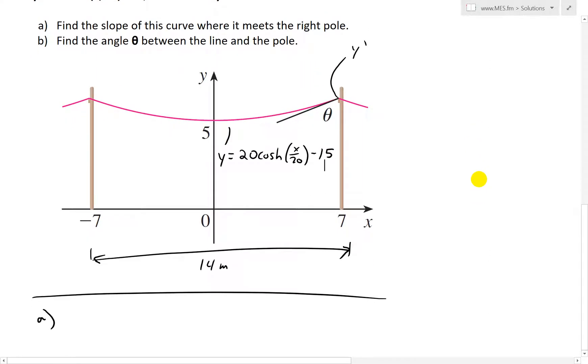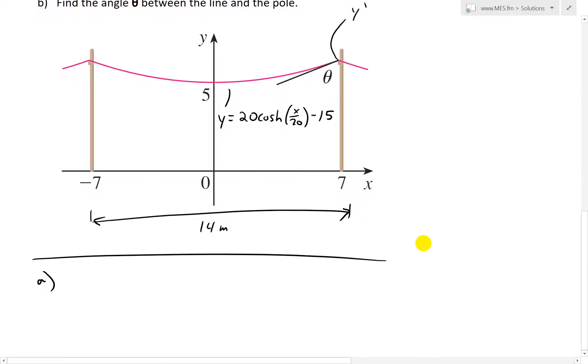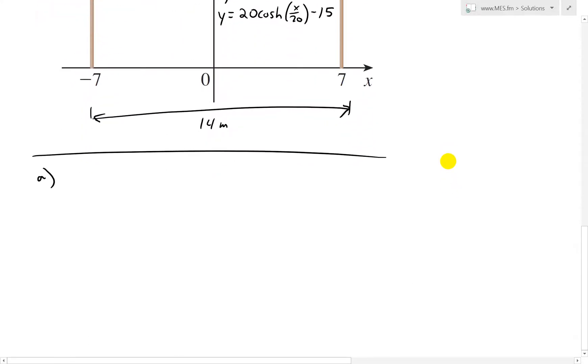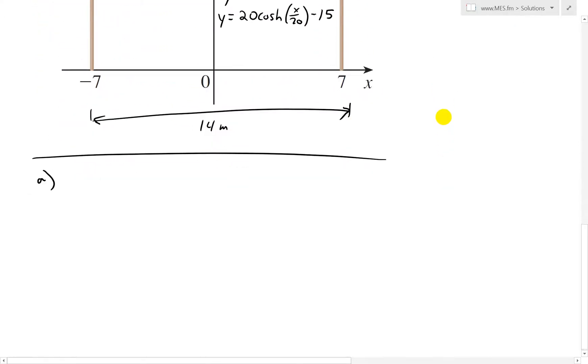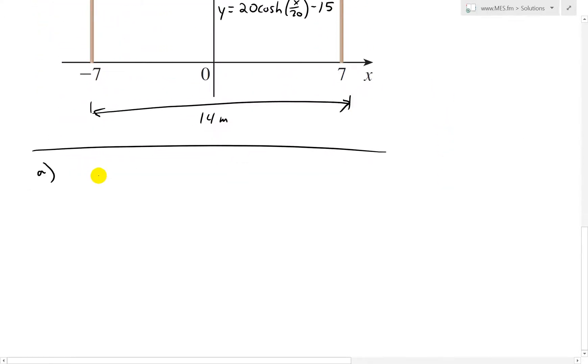Let's move that down here. So 20 cosh x over 20 minus 15 is the equation of that catenary. So we want to find out the slope at x equals 7 there. So we want to know y prime, the slope at x equals 7.